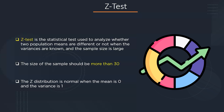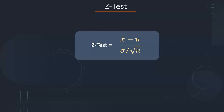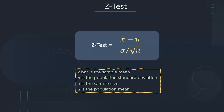Let's discuss this more clearly with an example. But before that, let's discuss the formula. To calculate the Z-value, we use the formula: Z = (x̄ − μ) / (σ / √n), where x̄ represents the sample mean, σ is the population standard deviation, n is the sample size, and μ is the population mean.